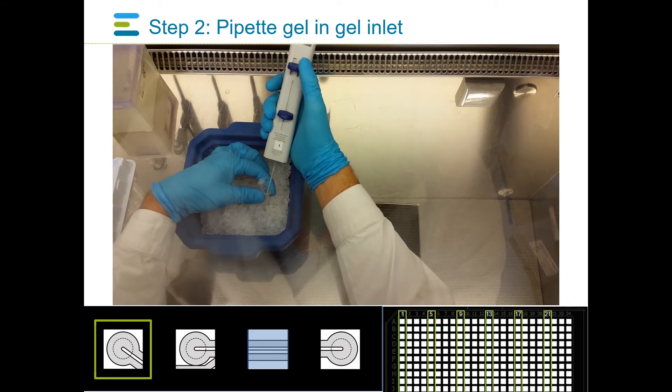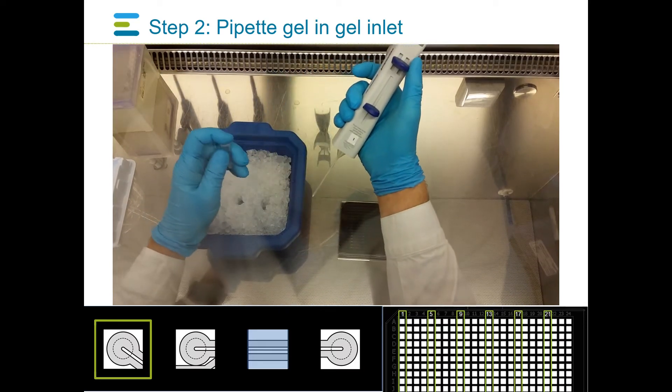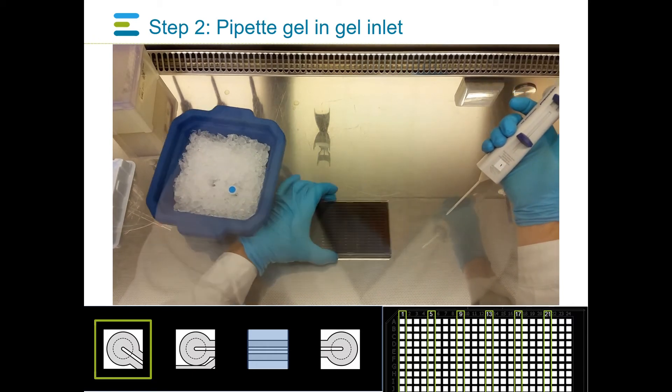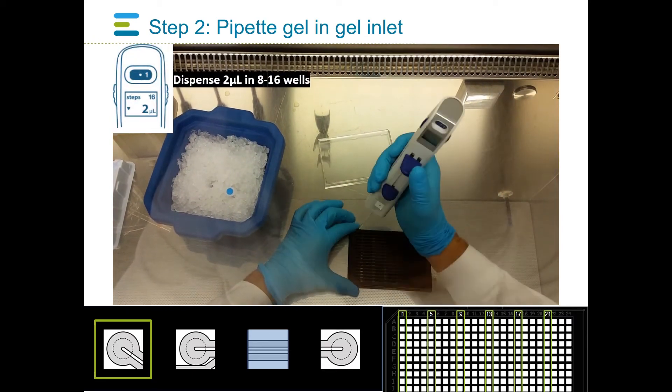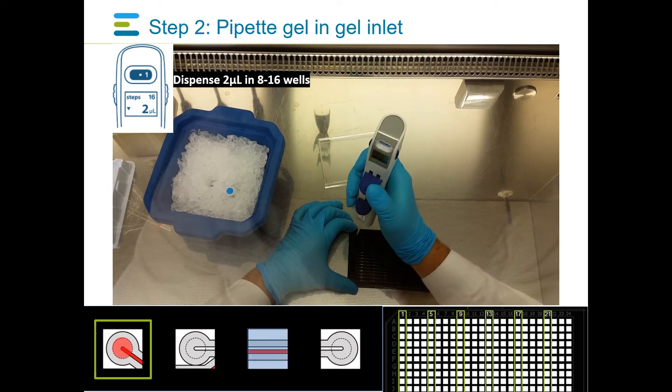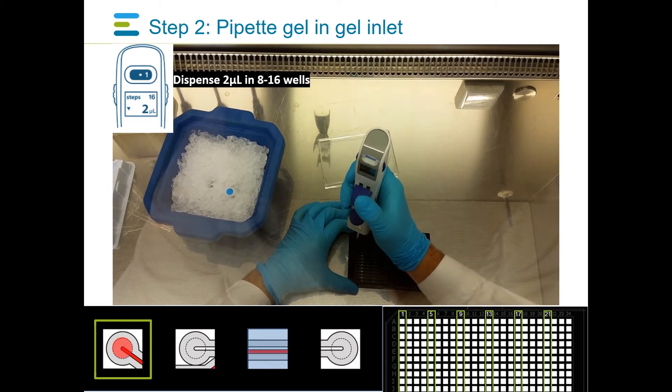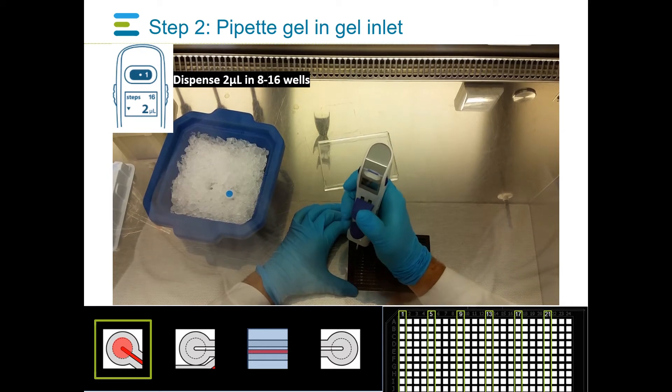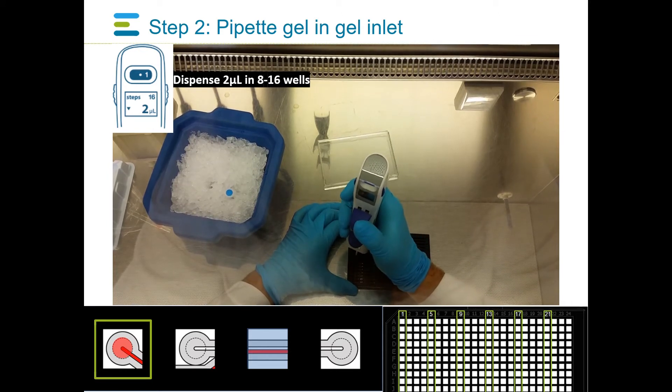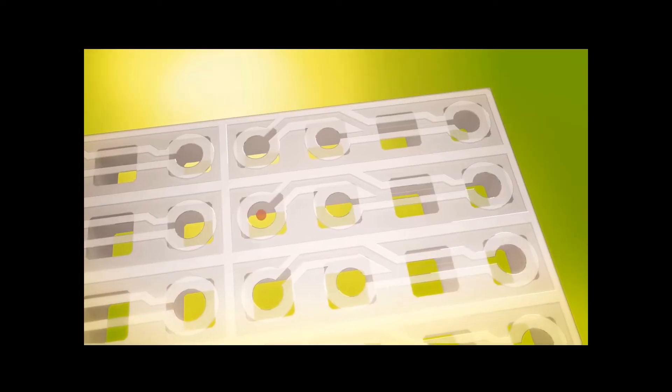Dispense two microliters of ECM gel into each gel inlet of columns 1, 5, 9, 13, 17, and 21. Ensure centered dispensing of the droplets, so the gel will be drawn into the channel by capillary force, where it will align alongside the microfluidic channel.